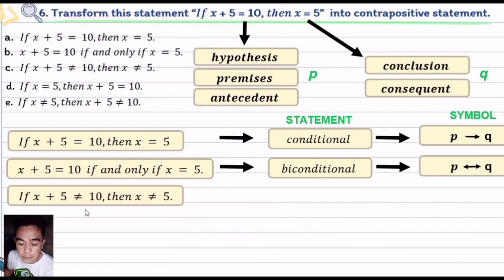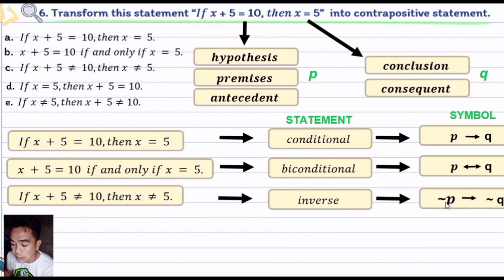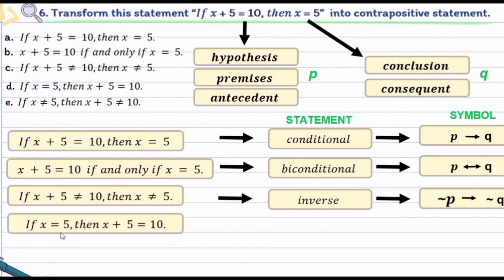Option c: if x plus 5 is not equal to 10 then x is not equal to 5. As you observe in the conditional statement, you simply just negate it. Therefore we call it an inverse statement. In symbol, just negate p and just negate q, we have now not p then not q.